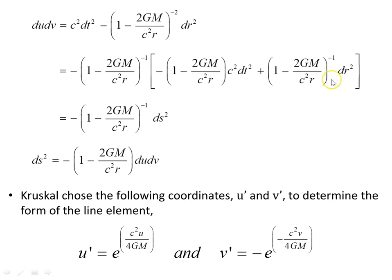Taking the time and radial part of the Schwarzschild line element (not the angular part) and multiplying by a suitable factor, we find that terms cancel, leaving c²dt² and a radial term. This equals a constant times ds², and multiplying through by the appropriate factor gives ds² = du dv times that factor.